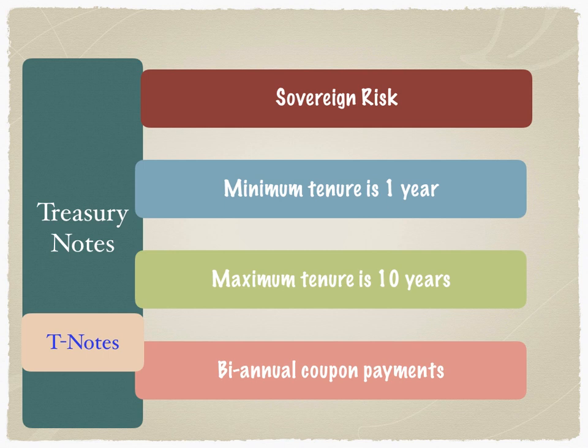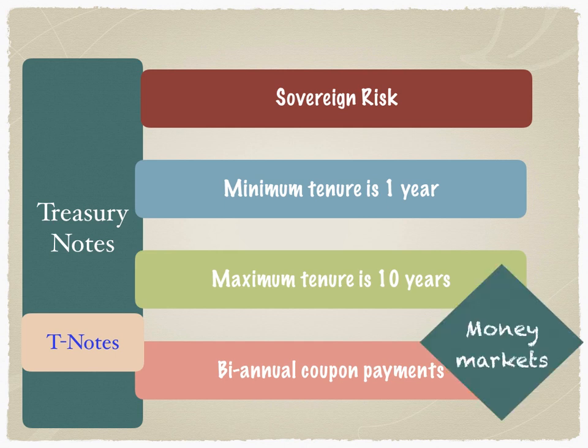So to summarize the contrast: treasury bills are short-term, treasury notes are medium-term. Treasury bills have zero coupon payments, whereas treasury notes have biannual coupon payments. Treasury notes could be traded in the money markets or in the capital markets — also called the bond markets. Keep in mind that money markets and bond markets are all OTC markets; it's just a question of terminology as to where they are traded.